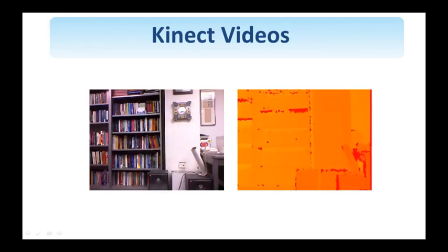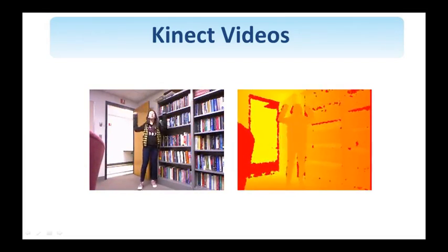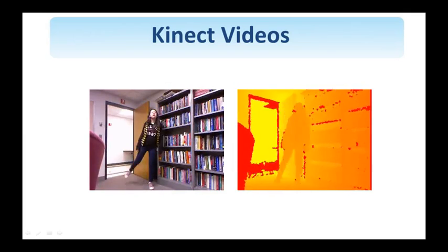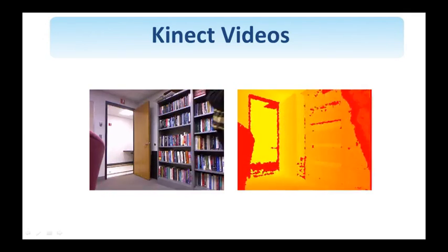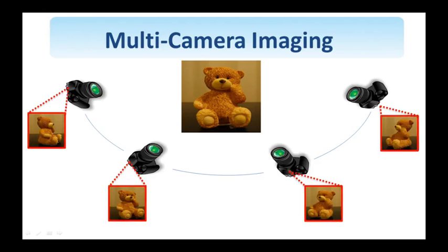We can see a short video that shows both the visible image and the depth image acquired by the Kinect camera. Very often we are interested in capturing the three-dimensional structure of an object. Instead of using two cameras as in the stereo case, we use many cameras on a specific rig, and the image of this particular object is viewed from many different angles.